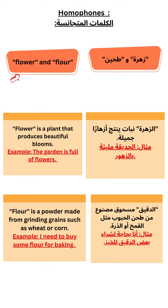Flour and flower. 'Flower' is a plant that produces beautiful blooms. Example: The garden is full of flowers. 'Flour' is a powder made from grinding grains such as wheat or corn. Example: I need to buy some flour for baking.